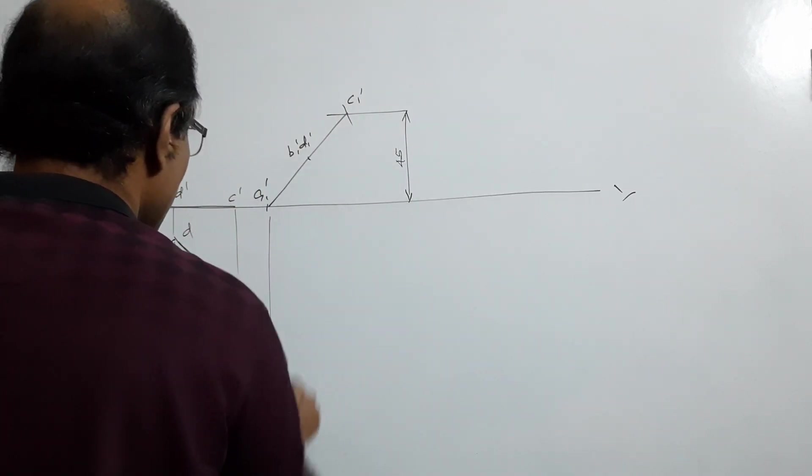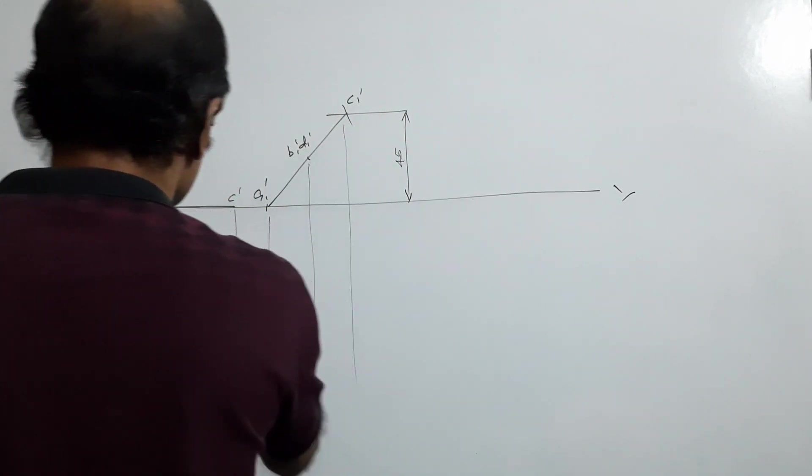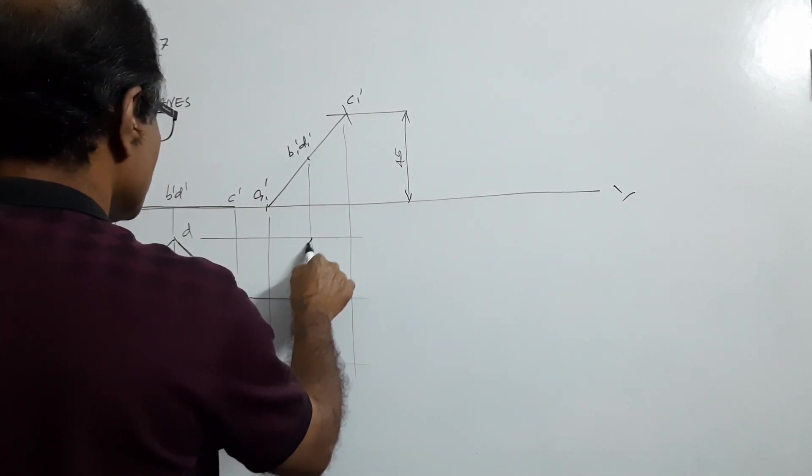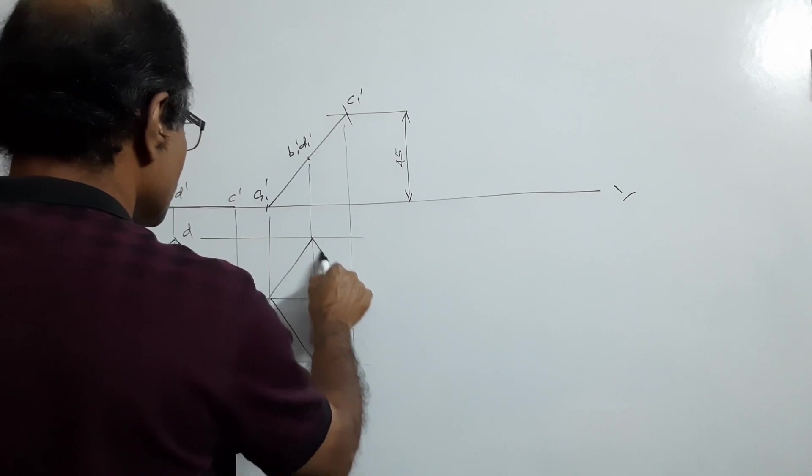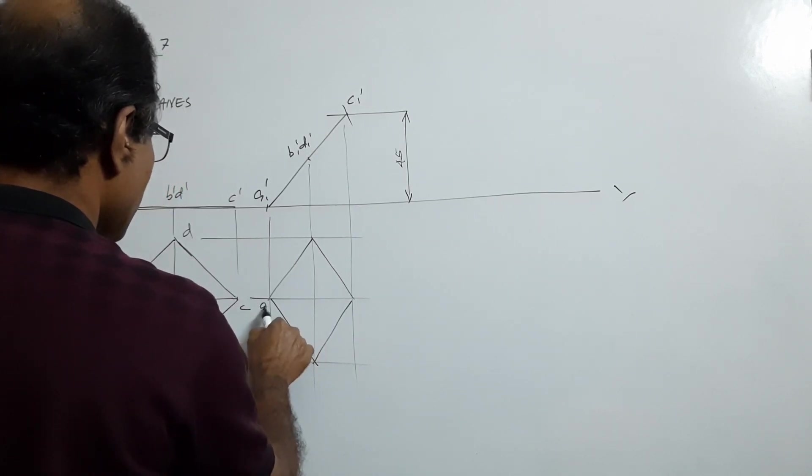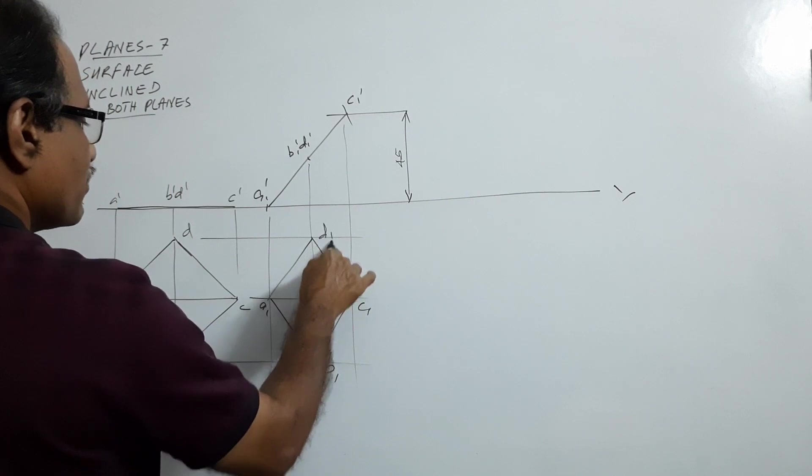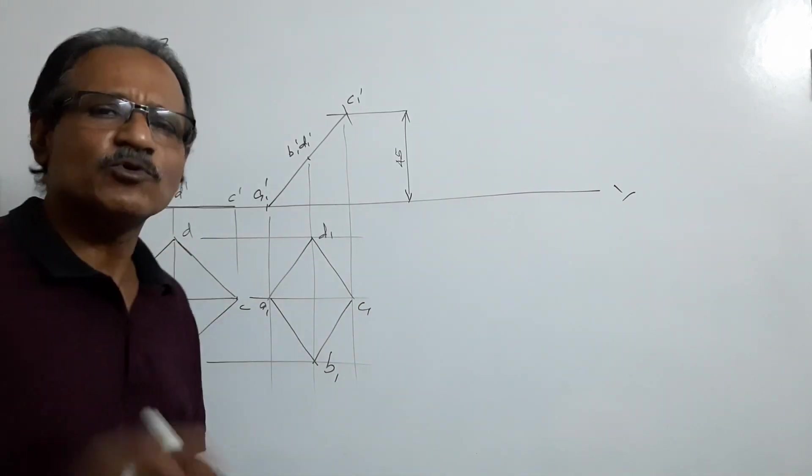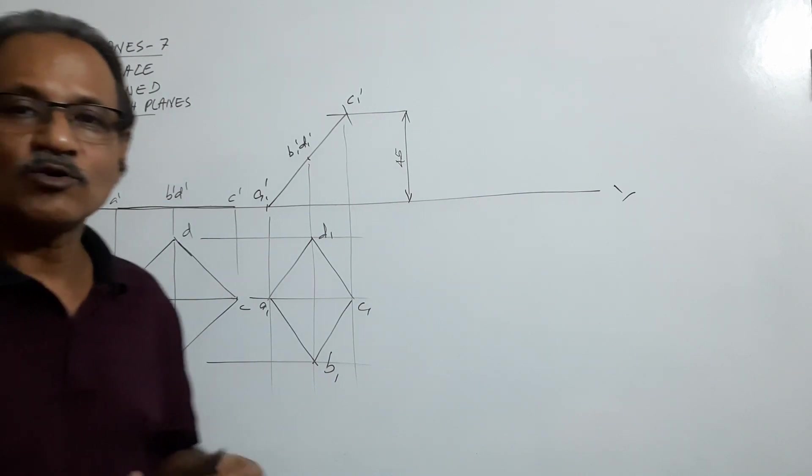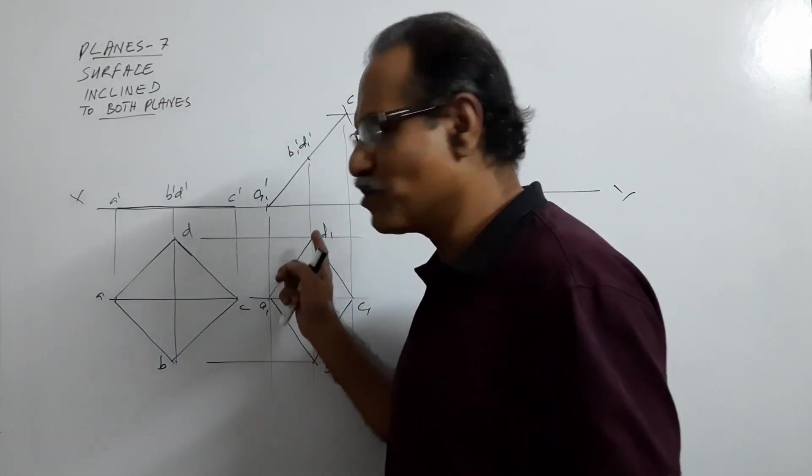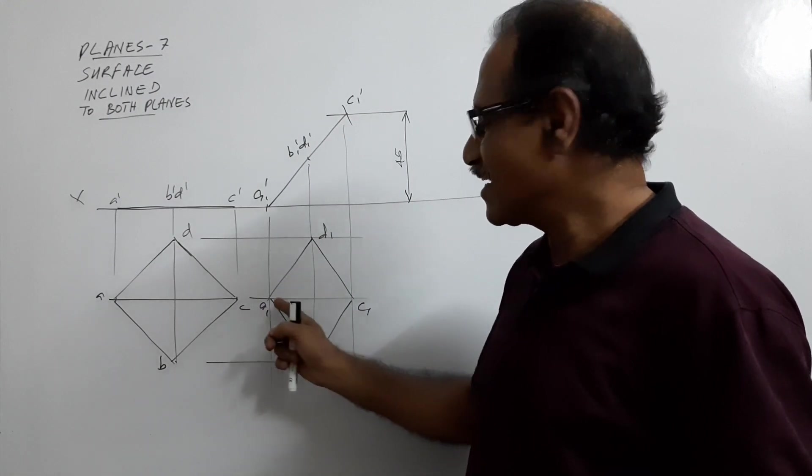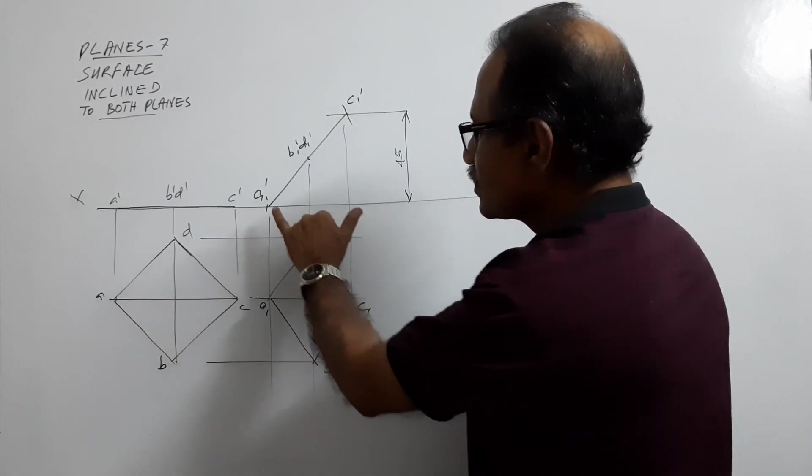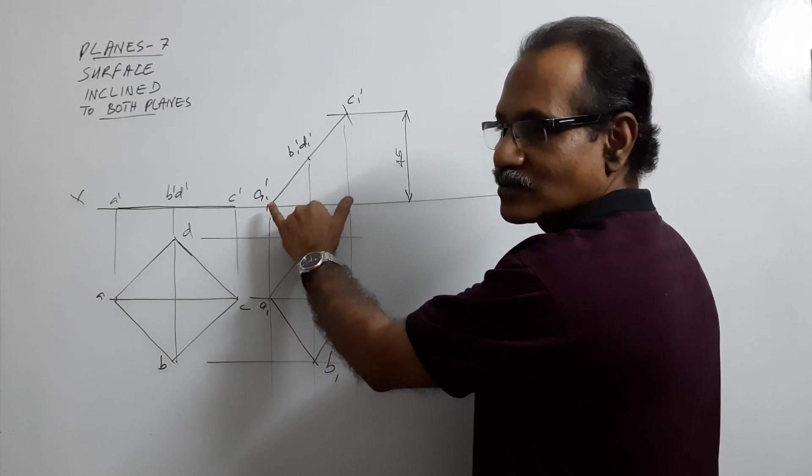Drop the plan. A1, B1, C1, D1 - what is the plan? Plan is some rhombus with 70mm as the larger diagonal and some shorter diagonal. What is that? This is the shorter diagonal, you don't know how much it is.